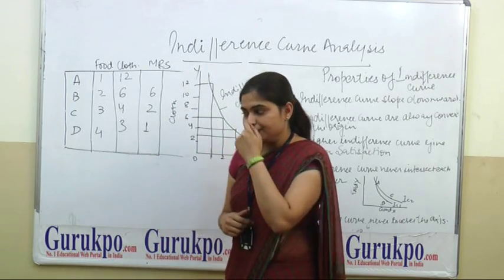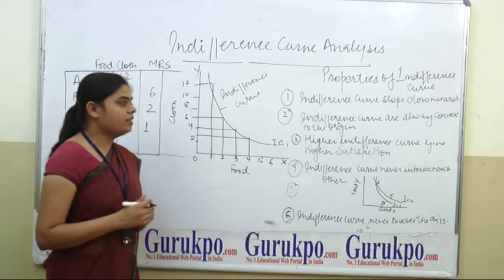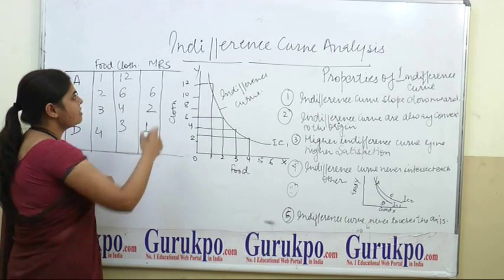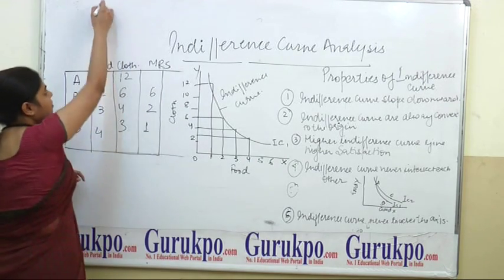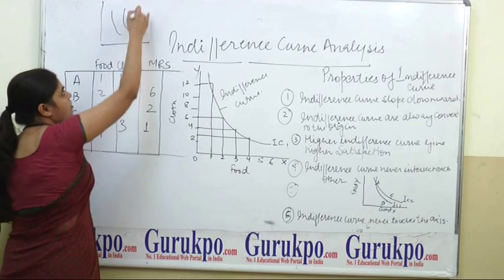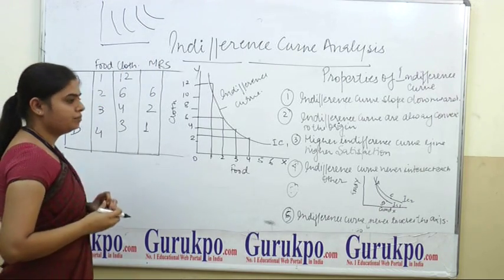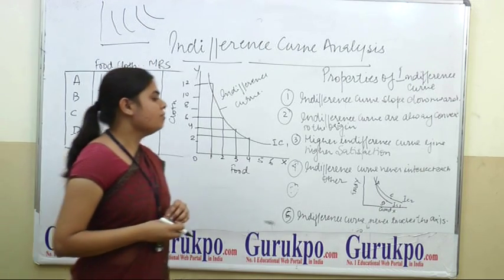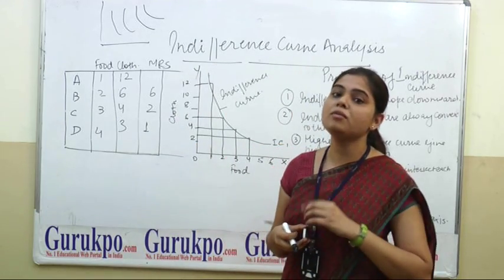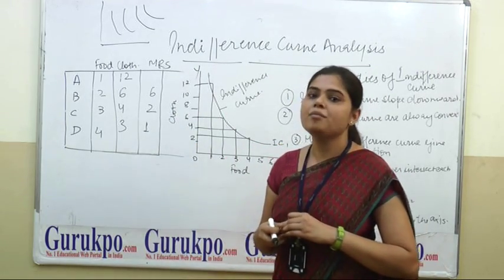A higher indifference curve gives higher satisfaction. There are many indifference curves, and when we show the combination of indifference curves on one map, that is known as an indifference map.